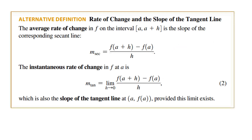Another definition, which is alternative to our previous one. For a secant slope, you can find it through f of a plus h minus f of a over h. For the instantaneous rate of change, or the slope of a tangent, it's equal to the limit as h goes to 0 of f of a plus h minus f of a over h. Here you can say that h is equivalent to x minus a.